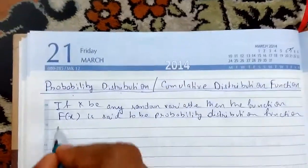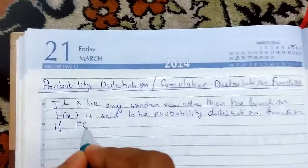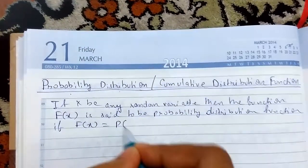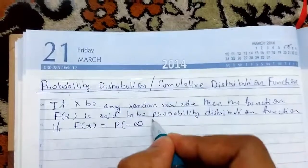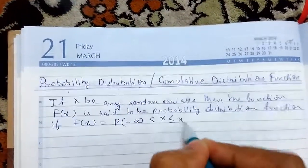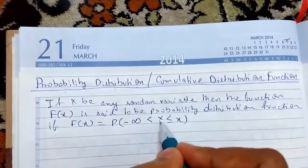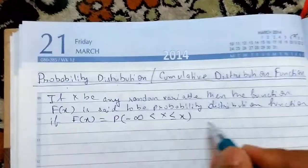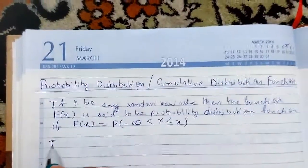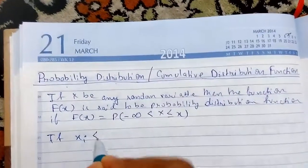If it satisfies this condition: if F of X, that is equal to P or probability of minus infinity. So this is the random variable, this is the event. If X_i is less than X_{i+1}.